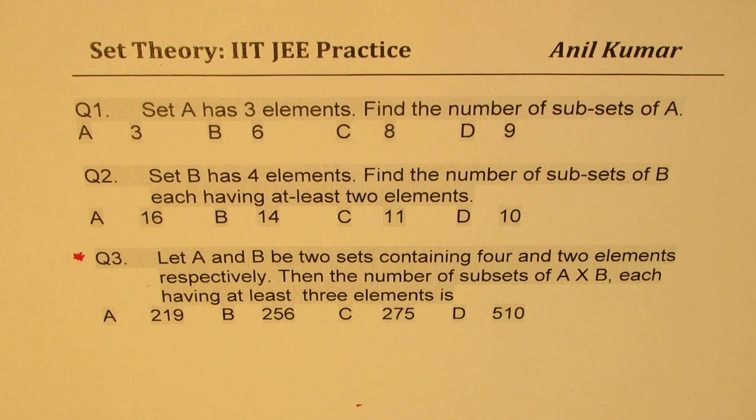And question number three: Let A and B be two sets containing four and two elements respectively. Then the number of subsets of A cross B, each having at least three elements is what? Four choices are given to you. I'd like you to pause the video, answer the question, and then look into my suggestions.